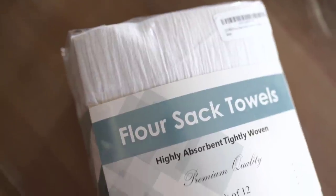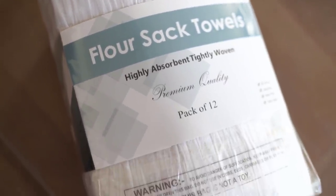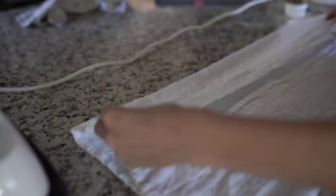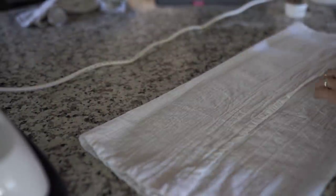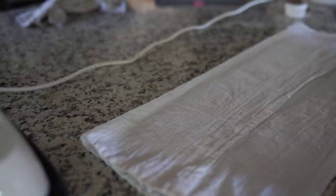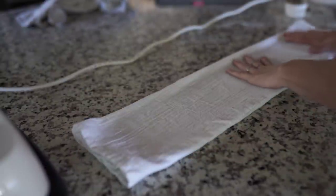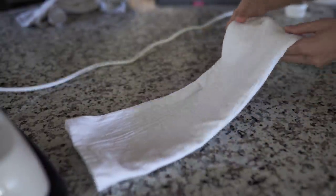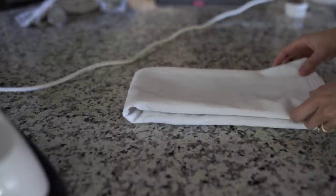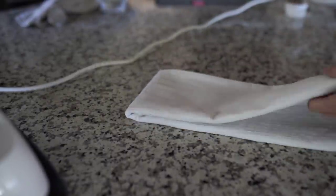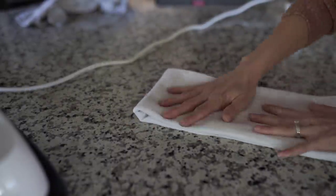So I found this pack of flower sack towels. It comes in a pack of 12 on Amazon. I think they were about $12 to $14, a really good deal for that many towels and also that many projects. So I'm just going to fold this the way that I would want it to be folded and kind of find your center of the towel. That way you can put your image right on the center there.